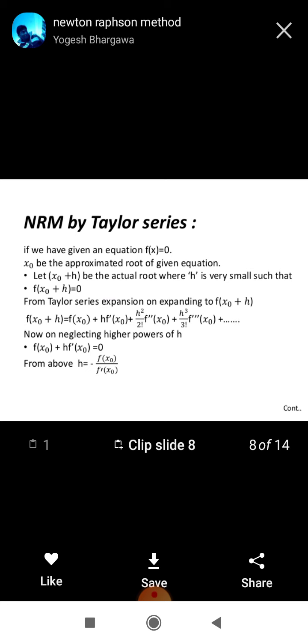Now, on neglecting higher powers of h, it is because h is very small. So, h square more small, h cube more small, these are negligible. If any number is very less, then its square and higher order are more less. Then, we have neglected the higher order terms and lower order terms fx0 and f prime x0 will be remaining.